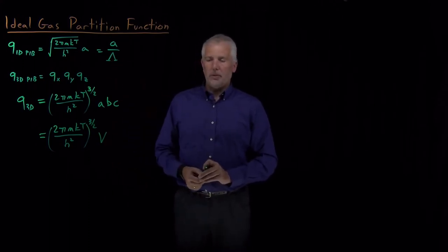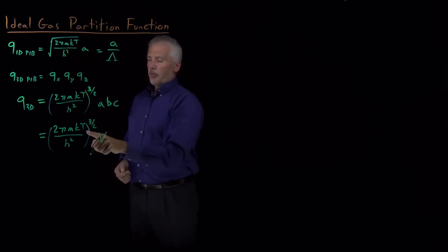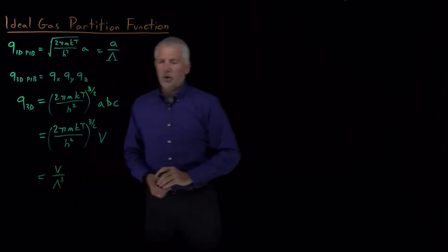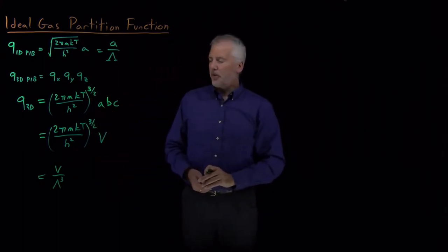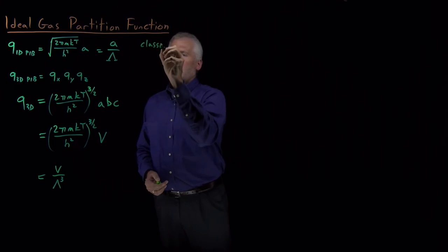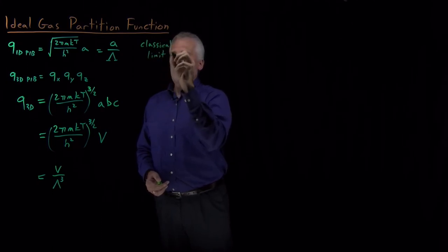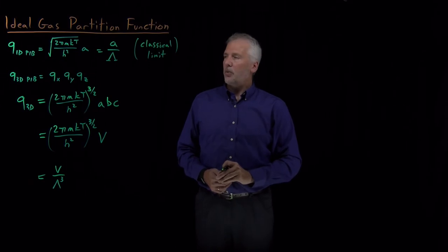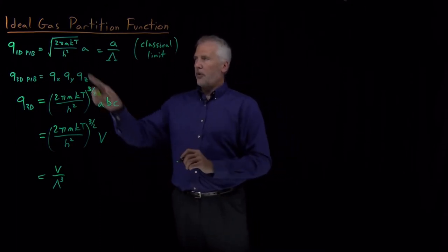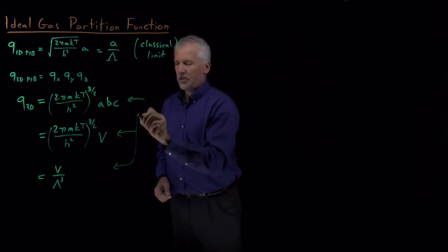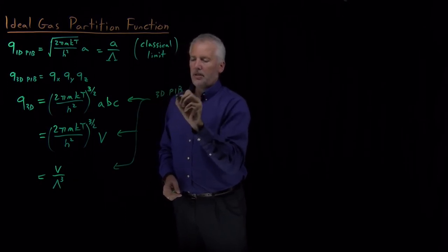Remembering our definition for the thermal de Broglie wavelength, the quantity (2πmkT/h²)^(1/2) is 1 over the thermal de Broglie wavelength. So when cubed, it's just 1 over the thermal de Broglie wavelength cubed. Any one of these three expressions is valid for the partition function of a 3D particle in a box, and they hold in the classical limit — where instead of summing Boltzmann factors we computed the integral, treating any energy level as allowed.